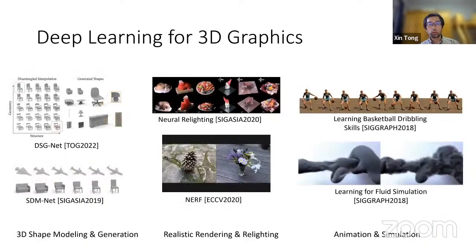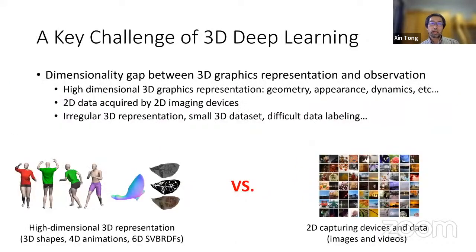For 3D graphics, deep learning enables new approaches and solutions for shape modeling and generation, realistic rendering, character animation, and physical simulation. Despite these progresses, compared to other fields such as computer vision and natural language processing, the advances of 3D deep learning are still relatively slow or behind.